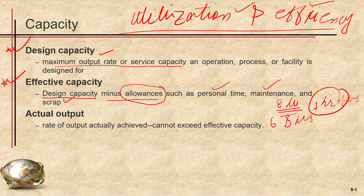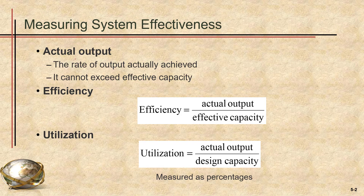The actual output is obviously the rate actually achieved. The actual output cannot exceed the effective capacity. It is essentially how much quantity we are getting after performing a particular process.